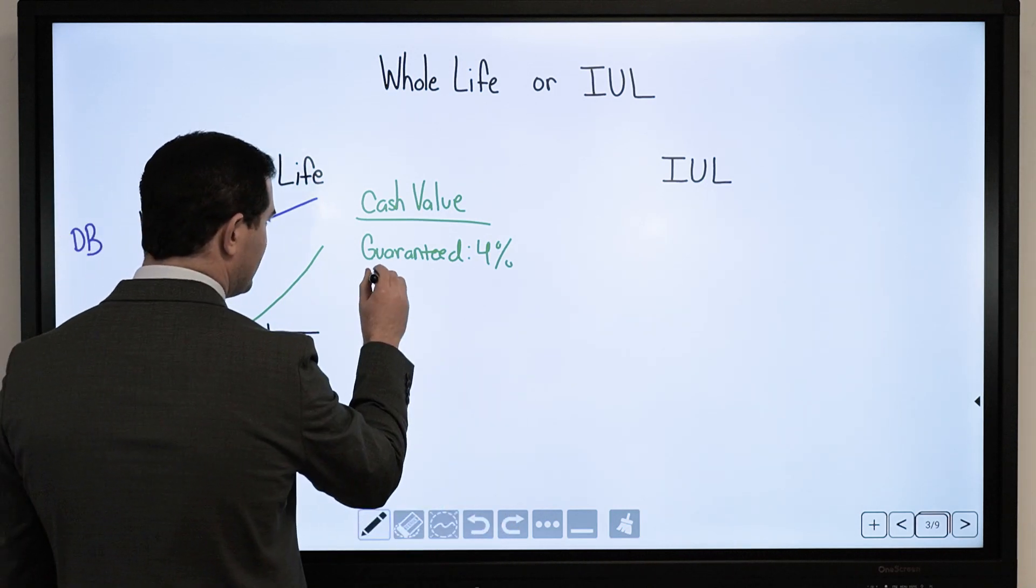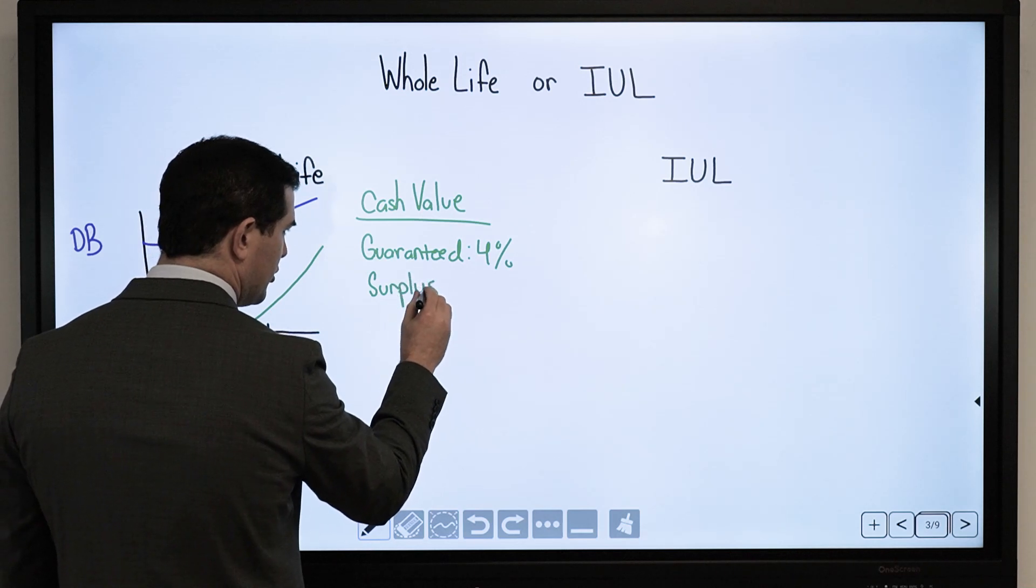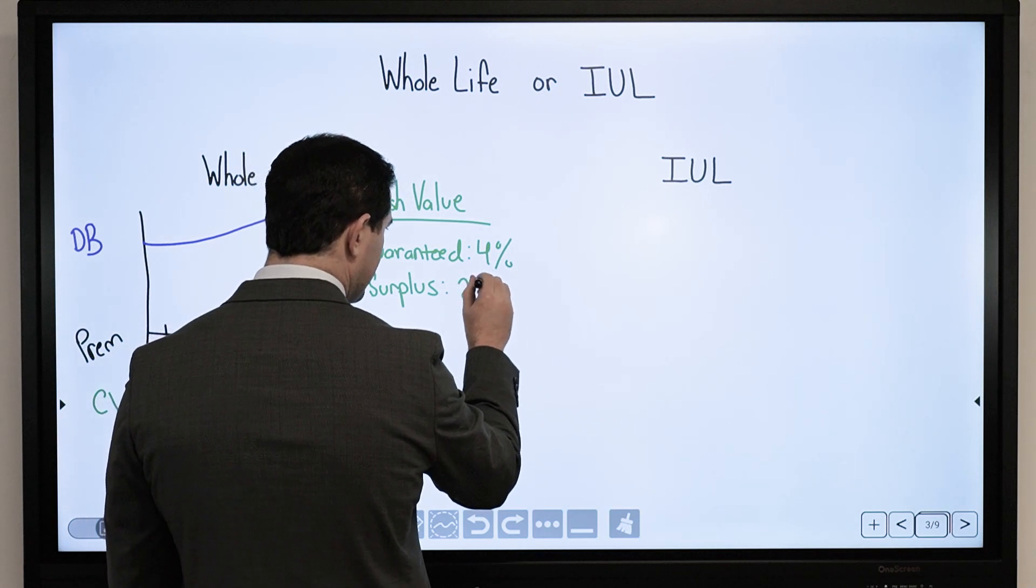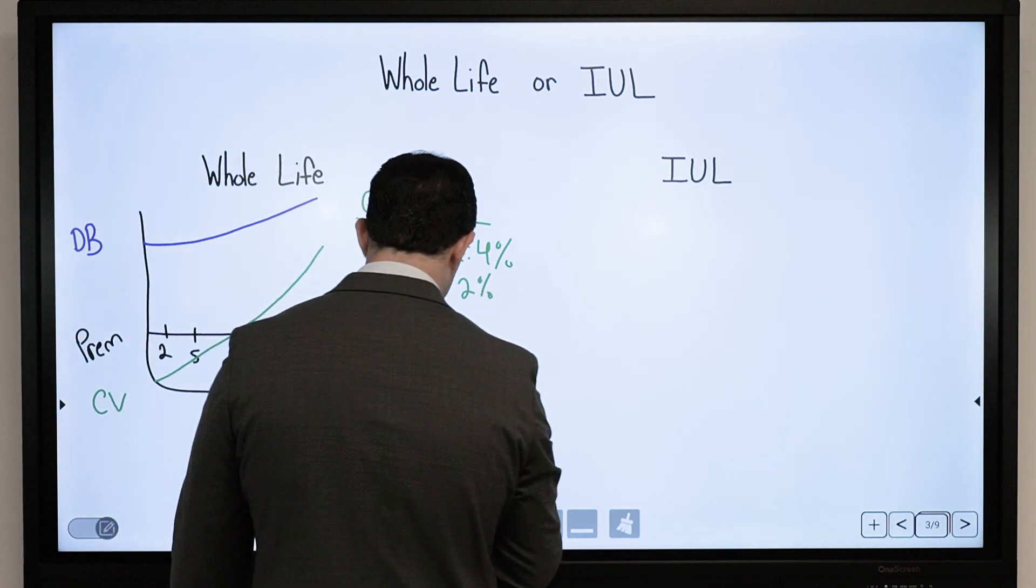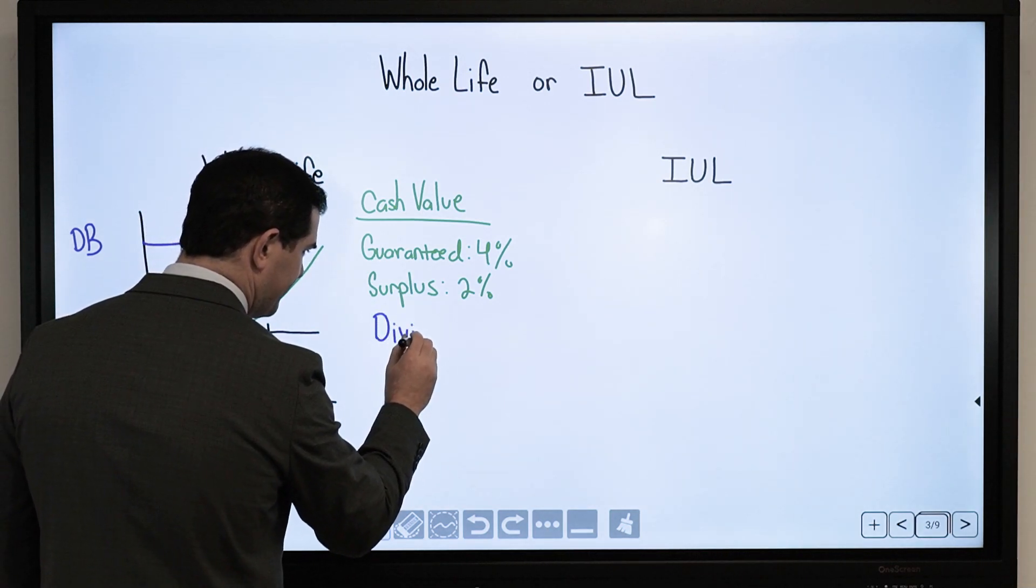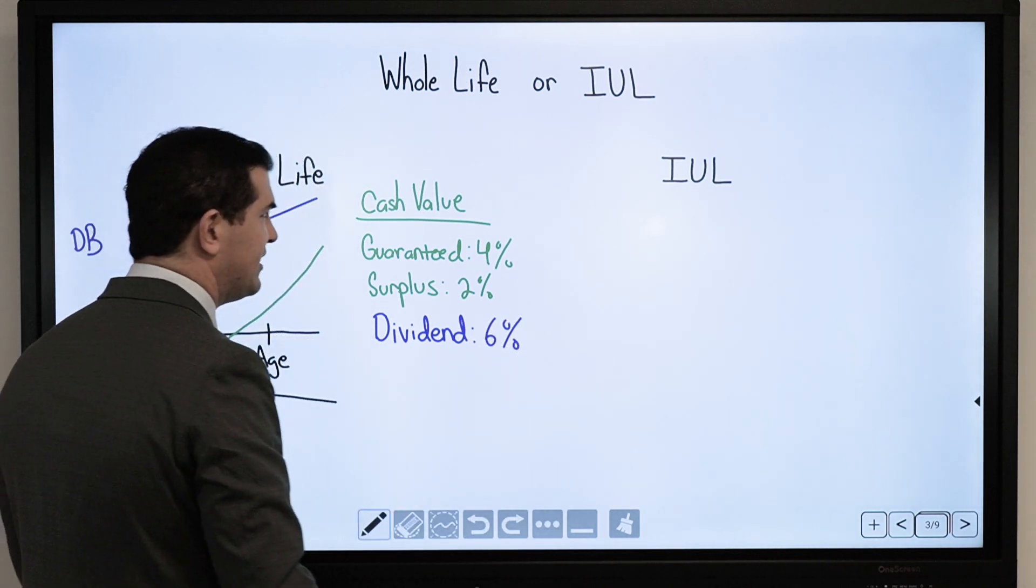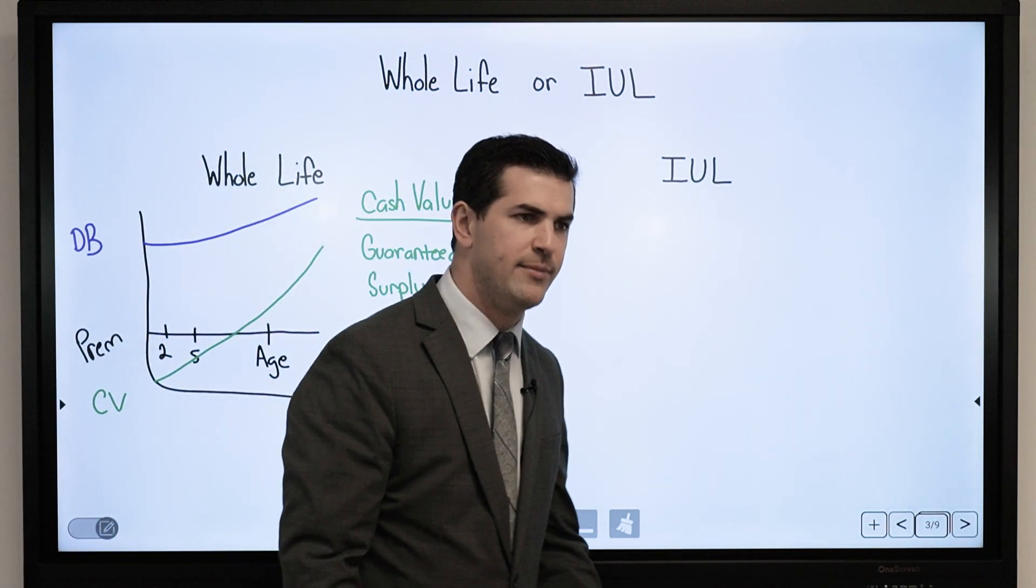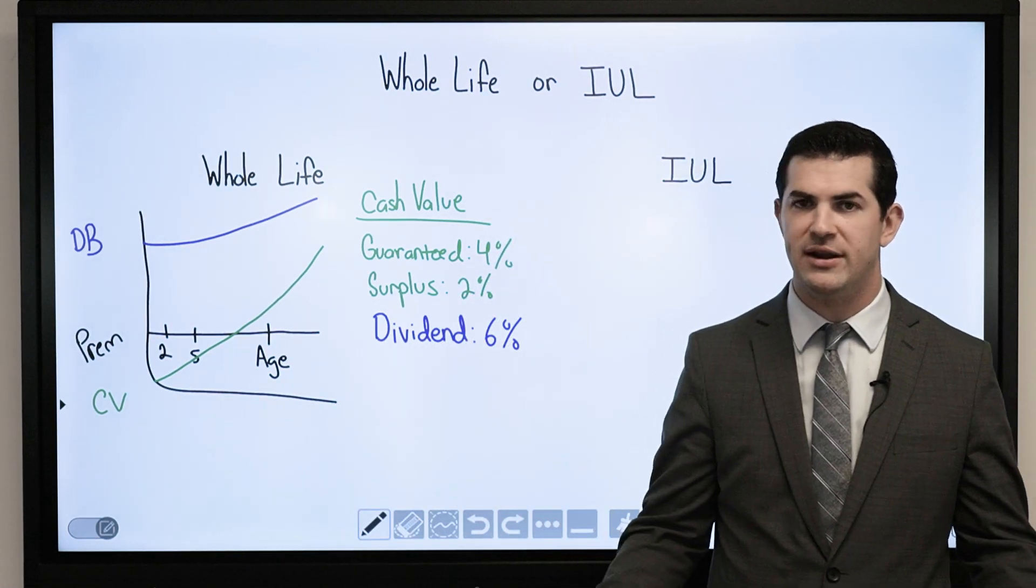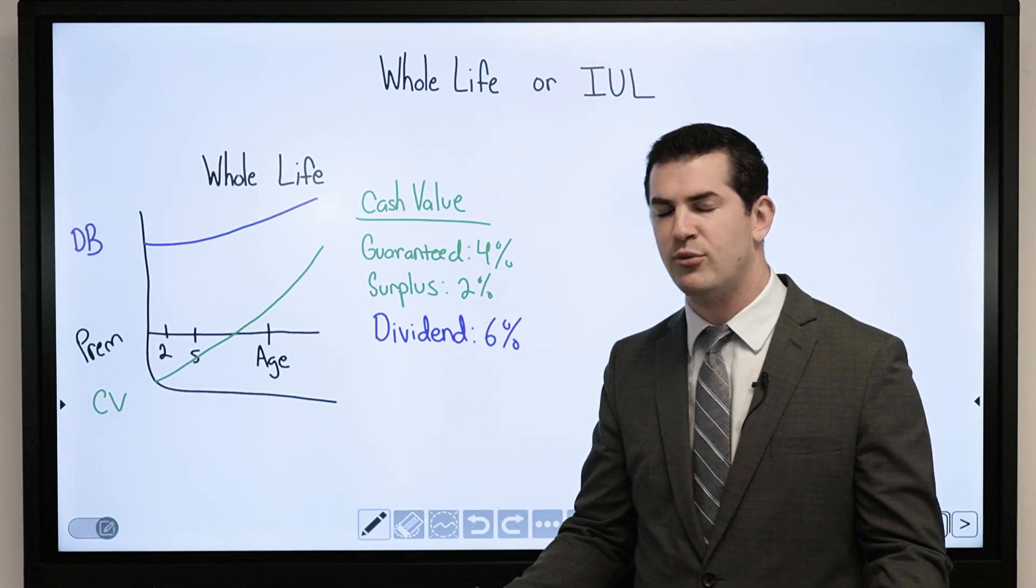The guaranteed floor is 4%. The company will also pay a surplus on top of that. In 2020 and 2021 projections, they may declare a surplus of 2%, giving a total dividend interest rate of 6%. Surplus rates and dividends do adjust over time. This is considered a fixed asset. Over time goes nowhere but up, very consistent. I have guarantees associated with it.